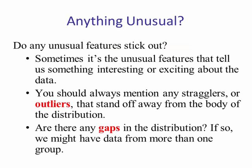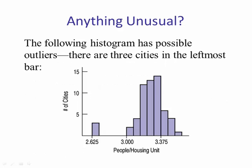The next thing we want to look at is whether there is anything unusual about the histogram or distribution — are there any possible outliers? That means values that are away from the rest, the body of the distribution, which can be identified by large gaps. In this case, there is a possible outlier to the left. Note that a histogram cannot definitively identify outliers — only a box plot can, and we'll talk about box plots later.